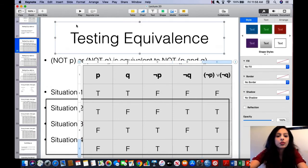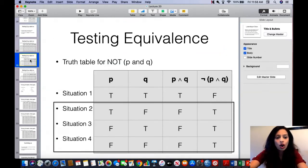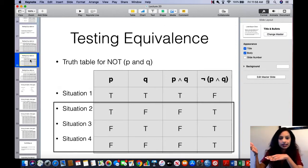So, now what we do is, once we have done with this, we move on to the next truth table, which is the right-hand side, right, which is negation of P and Q.